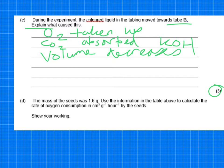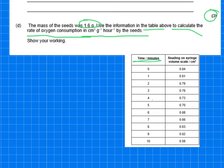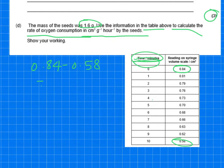And then D, it says the mass of the seed was 1.6 grams. Use the information in the table to calculate the rate of oxygen consumption in centimetres cubed per gram per hour by the seeds. So you've got the information and it shows you the time in minutes. So you've got 10 minutes. So in 10 minutes it goes from 0.84 to 0.58. So it's very simple. 0.84 minus 0.58. And that will give us 0.26 in 10 minutes.